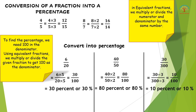In equivalent fractions, as we learned in fifth standard, we multiply or divide the numerator and denominator by the same number. For example, 4/5 multiplied by 3 on both numerator and denominator gives the equivalent fraction 12/15. Similarly, 8/7 multiplied by 2 gives the equivalent fraction 16/14. To find a percentage, we need 100 in the denominator — we use equivalent fractions to get the denominator as 100.